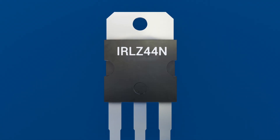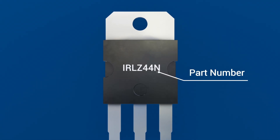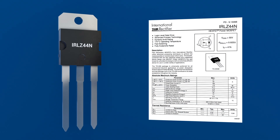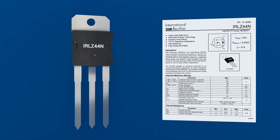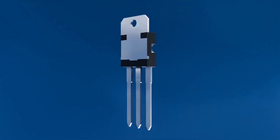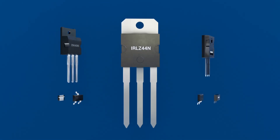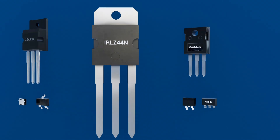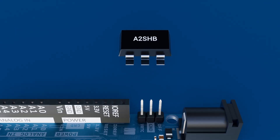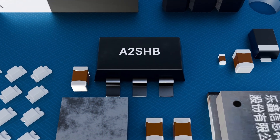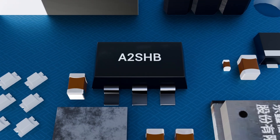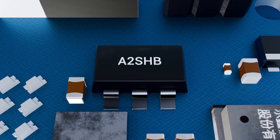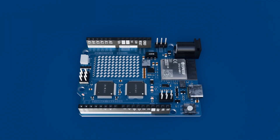The part number, laser-etched on the top, lets you look up the datasheet for ratings like maximum drain-source voltage, on-resistance, gate charge, thermal resistance, and more. From regulating power in your phone charger to driving transistors in your CPU, MOSFETs are the backbone of modern electronics. Next time you spot that little three-terminal package on a circuit board, remember — it's not just a transistor; it's a high-speed, voltage-controlled gate that makes our digital and power world possible.